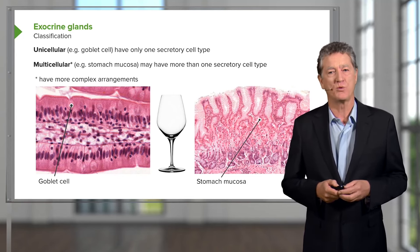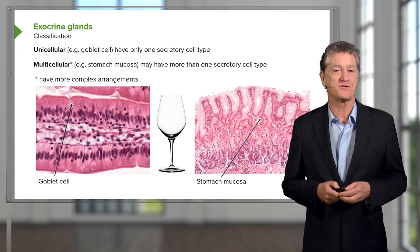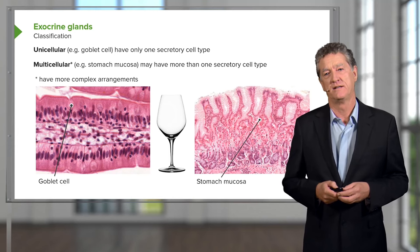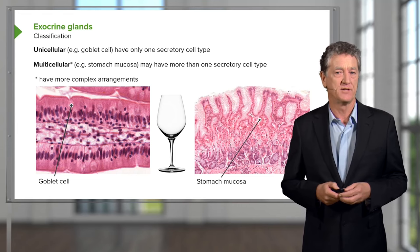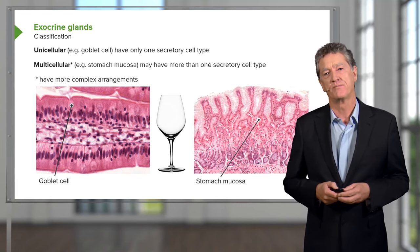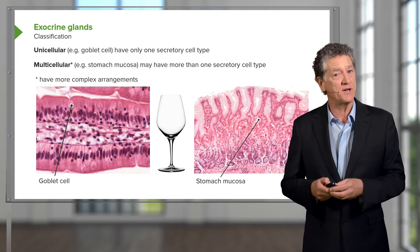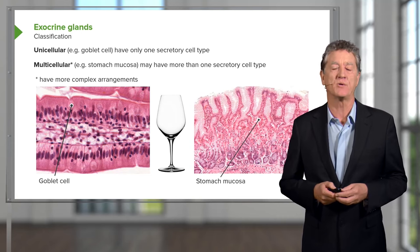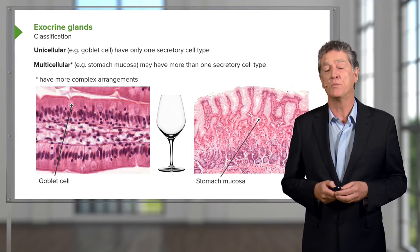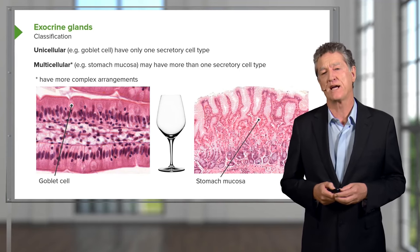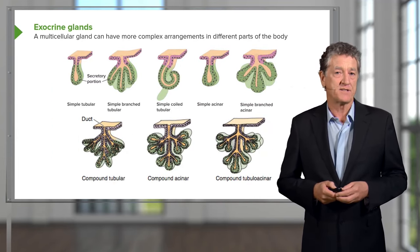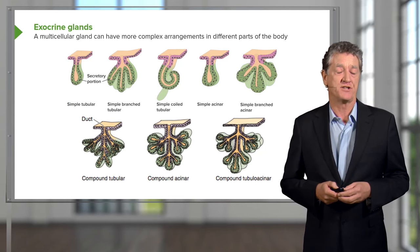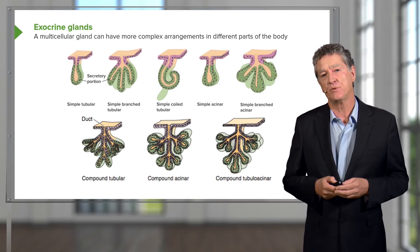I want you to remember the word 'mucosa' shown on this slide — stomach mucosa. The word mucosa is a term I'm going to use in a number of lectures, particularly when we look at organ systems. Please remember that word, because later towards the end of the lecture I'm going to explain what a mucosa is. These multicellular glands can get far more complex than just a sheet of cells like the stomach mucosa.